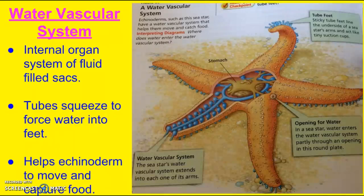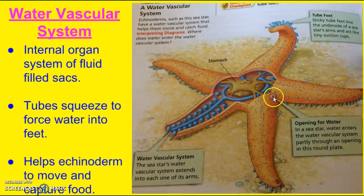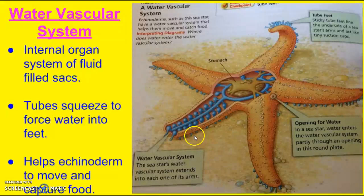For all of these, they have a water vascular system. This is the way that they move, and it also helps them capture food. The way it works is you have all these little sacks, and water comes in and is squeezed into them. When that happens, the little feet or tubes on the outside become sticky, almost like a suction cup, and this allows them to grip onto things or to move.